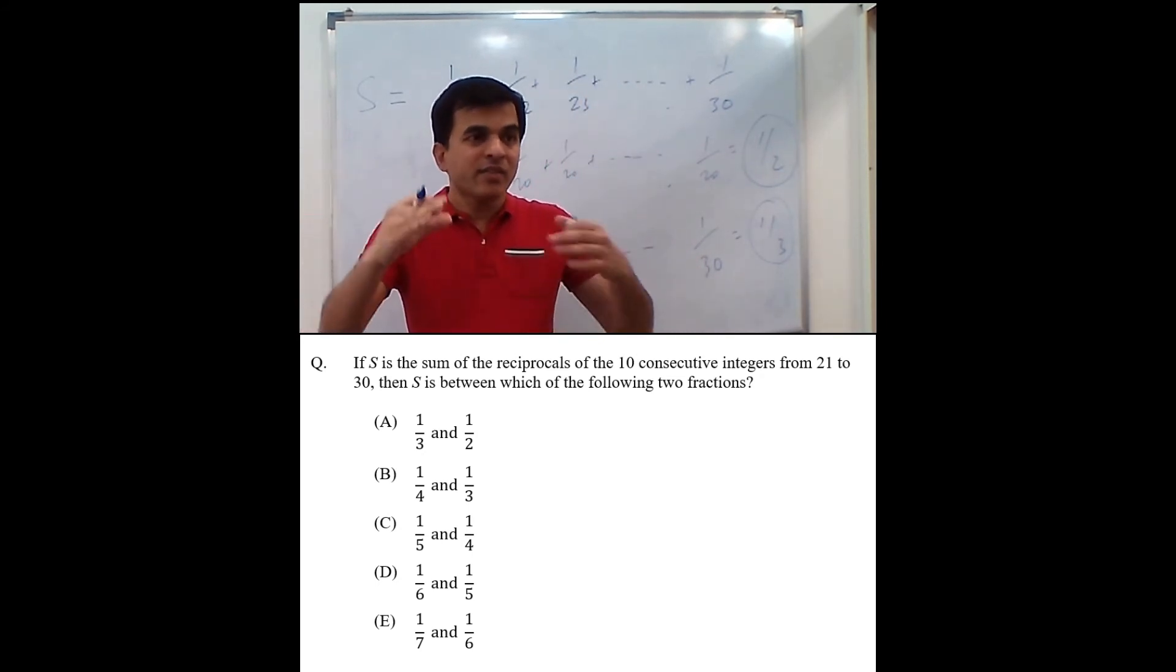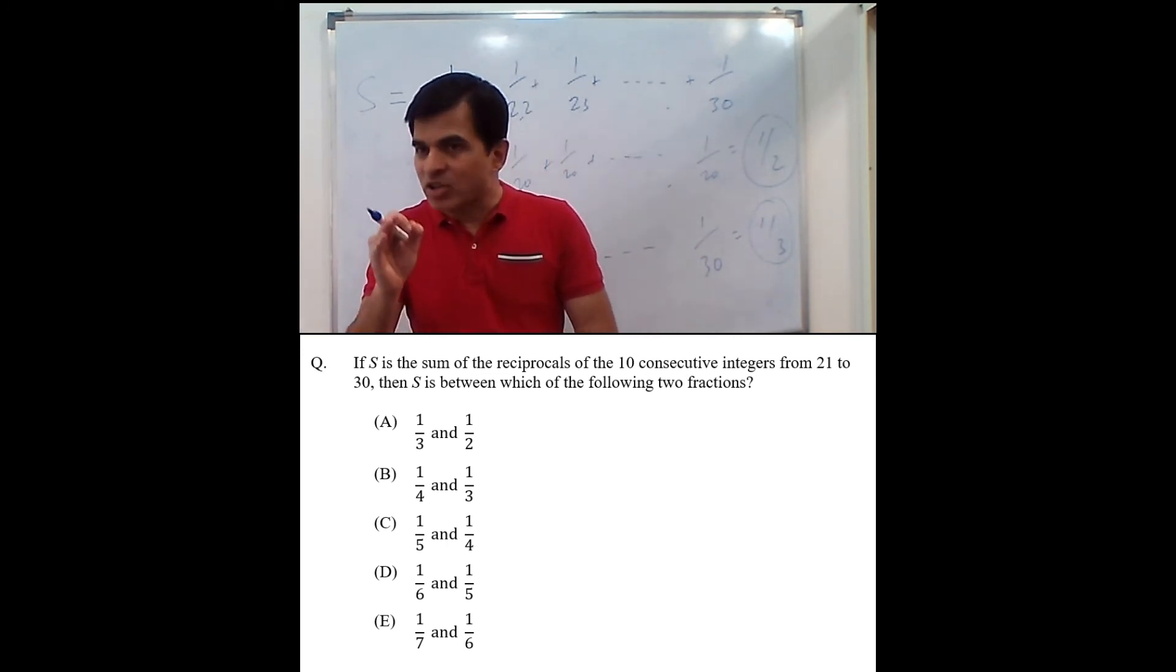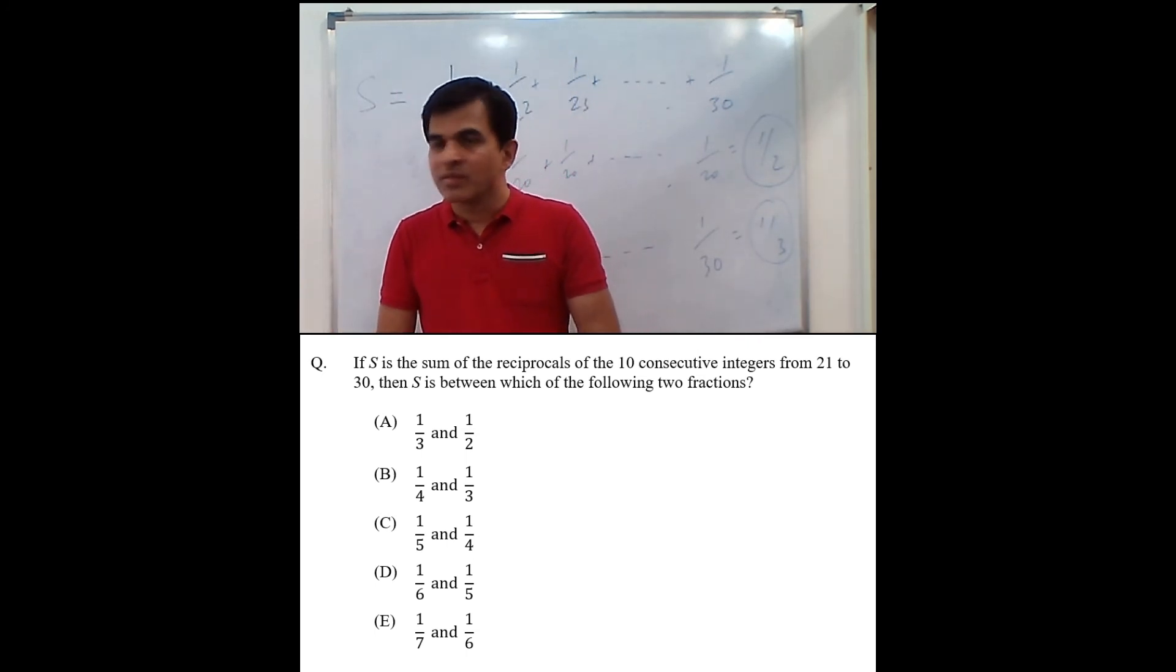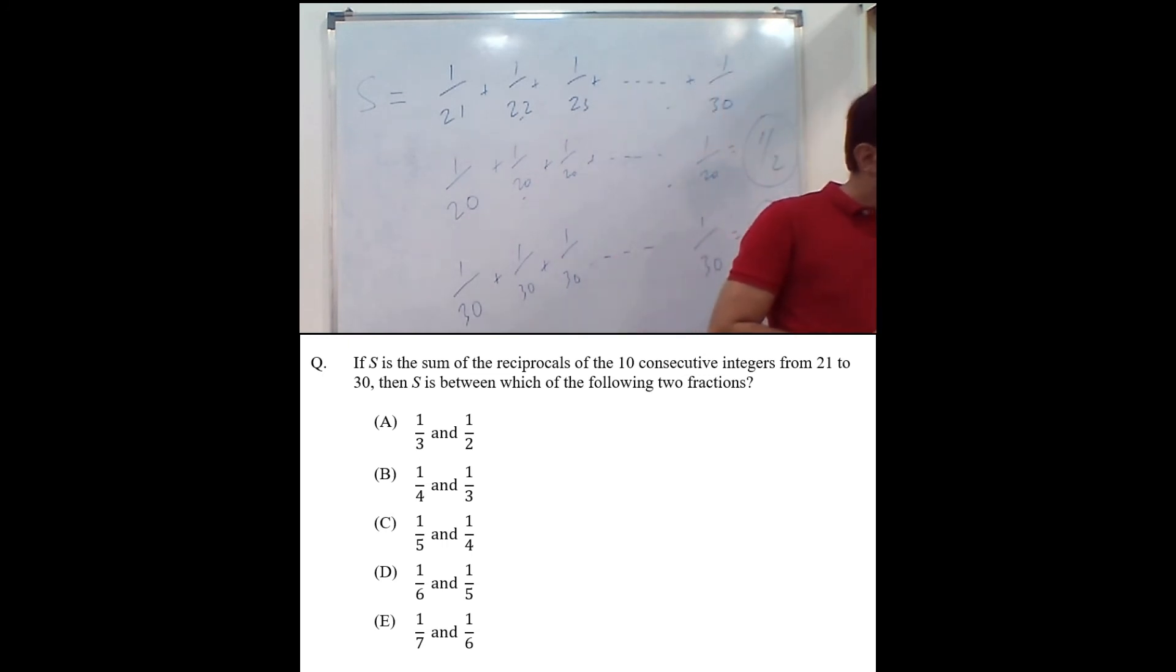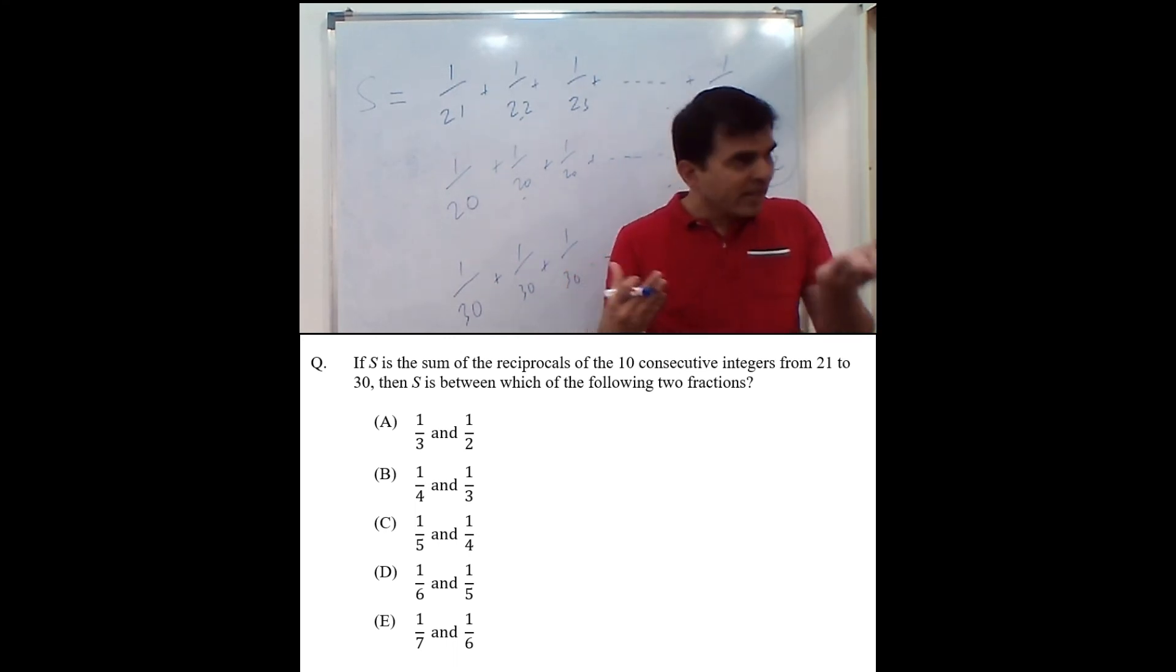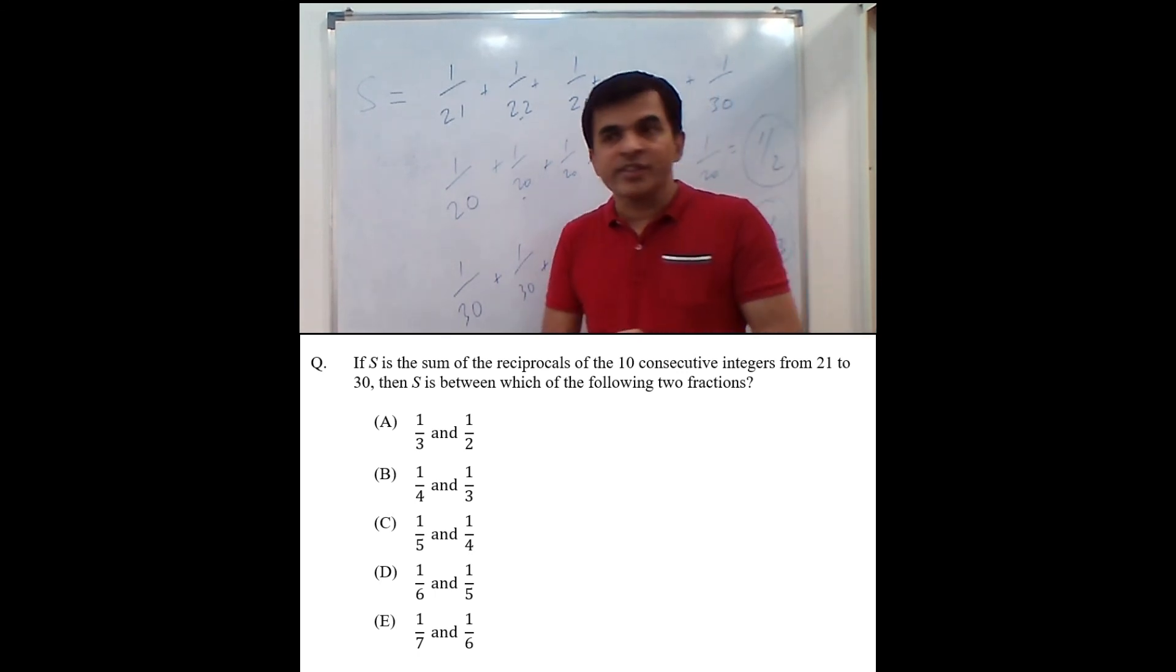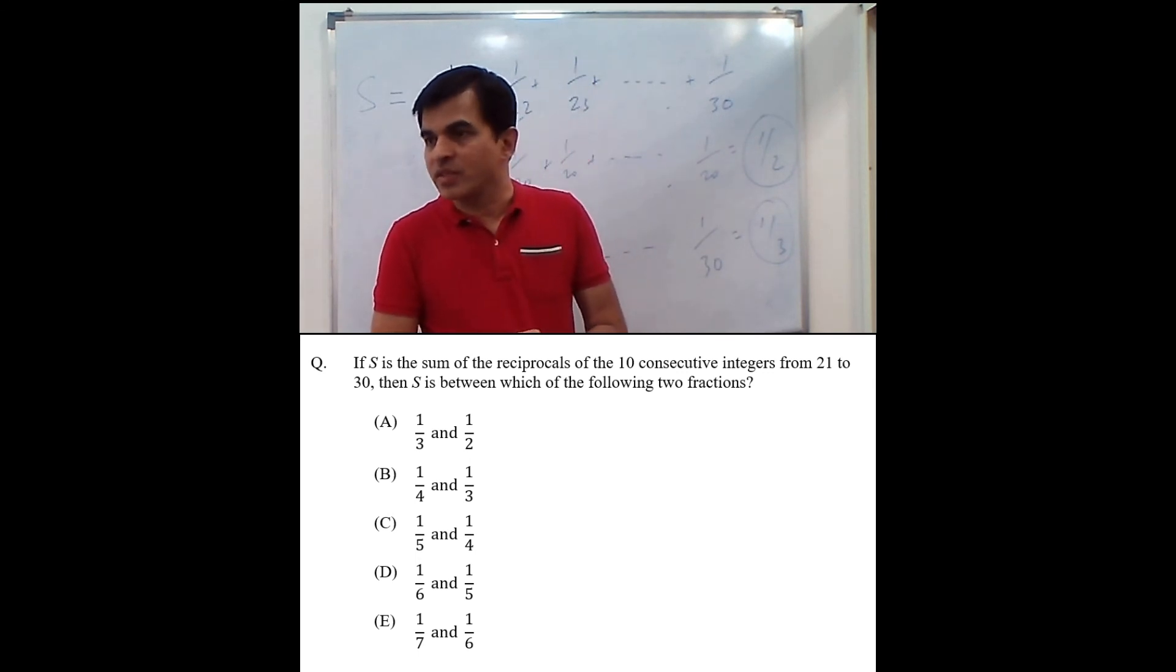And that is giving us 1 over 3. Which means the actual total has to definitely be higher than 1 over 3. Because after increasing the denominators and decreasing the fractions, we got 1 over 3. Which means that our actual denominators will get slightly higher values. And therefore, total is slightly higher than 1 over 3. So now this is our lower end.